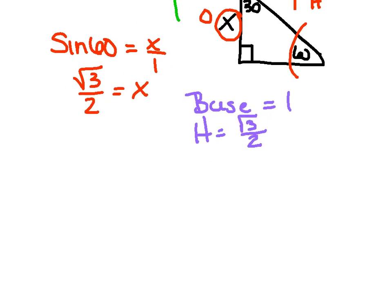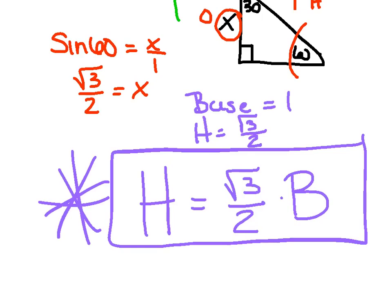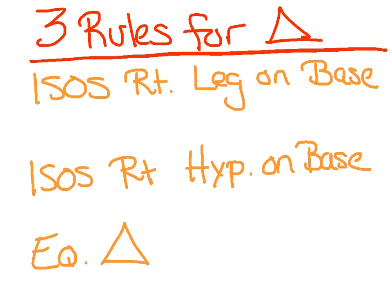So that's our key for equilateral triangles: radical 3 over 2 times the base. Let's recap the three rules before we apply them. For an isosceles right triangle whose leg is on the base — don't guess, draw it. Here's isosceles, here's my right, here's my isosceles, the leg is on the base, and you'll notice that the base and height are equal. So base equals height.